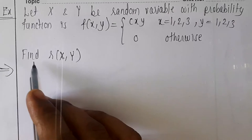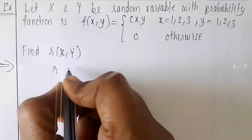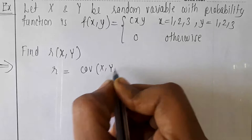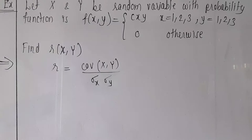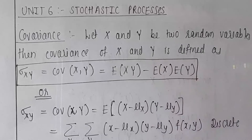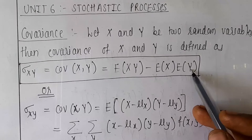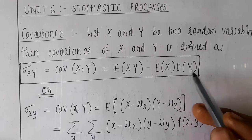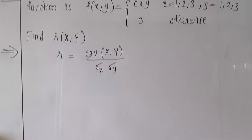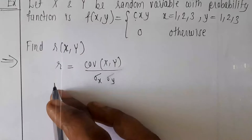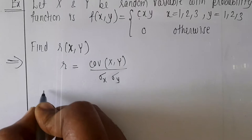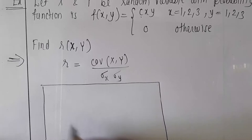We want to find r(X,Y). The formula for the coefficient of correlation is covariance(X,Y) divided by sigma_x times sigma_y. To find r, we need covariance(X,Y) = E[XY] - E[X]·E[Y], and we also need sigma_x and sigma_y, which require E[X²] and E[Y²]. But first, since f(x,y) = c·x·y, we need to determine the value of c. We prepare a table for all values of x and y.